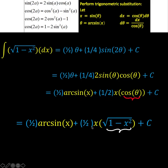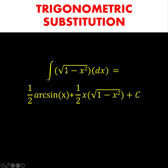Since everything is now expressed in terms of x, the integral of the square root of 1 minus x squared dx equals 1 half times the arcsin of x plus 1 half x times the square root of 1 minus x squared plus a constant. This completes our solution. In our next video, we use this result to find the numerical value of pi using the calculus technique called definite integration. See you in the next video.